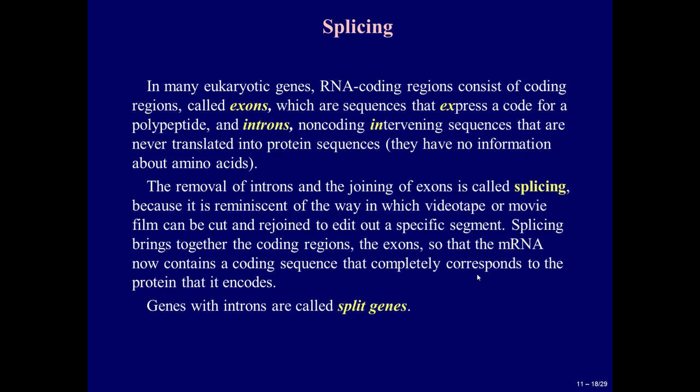The third step of mRNA processing is splicing. In many eukaryotic genes, RNA-coding regions consist of coding regions called exons — sequences that express a code for a polypeptide — and introns, non-coding intervening sequences that are never translated into protein sequences and have no information about amino acids. The removal of introns and the joining of exons is called splicing, reminiscent of the way videotape or film can be cut and rejoined to edit out a specific segment. Splicing brings together the coding regions so that the mRNA contains a coding sequence that completely corresponds to the protein it encodes.